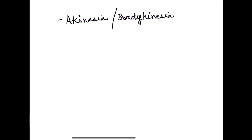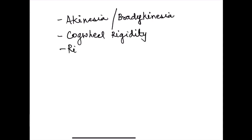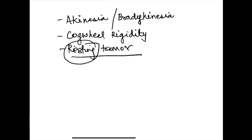Other cardinal features of Parkinson's disease include cogwheel rigidity and resting tremor. Resting tremor is tremor that occurs in the resting state — when no voluntary movement is going on. These tremors occur at a frequency of approximately 8 Hz, or eight cycles per second. The exact reason is not fully known, but it is thought to be due to increased oscillations in the basal ganglia circuit.